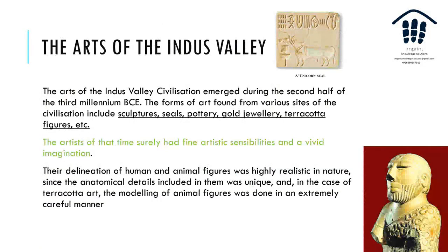Now let's start with the arts of Indus Valley. The most famous, obviously, is the priest-king, and the unicorn seal, the Pashupati seal, and so on. The arts of the Indus Valley emerged during the second half of the third millennium BC. The forms of art found from the various sites include sculptures, seals, pottery, gold jewellery, terracotta figures, etc. Artists had a very vivid imagination and a fine aesthetic sense. Their delineation of human and animal figures was highly realistic in nature and the anatomical details included in them were unique.